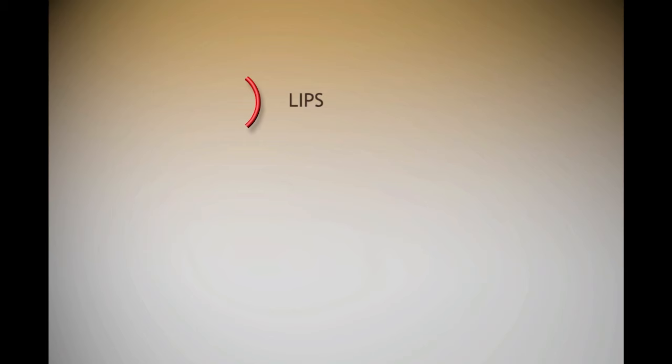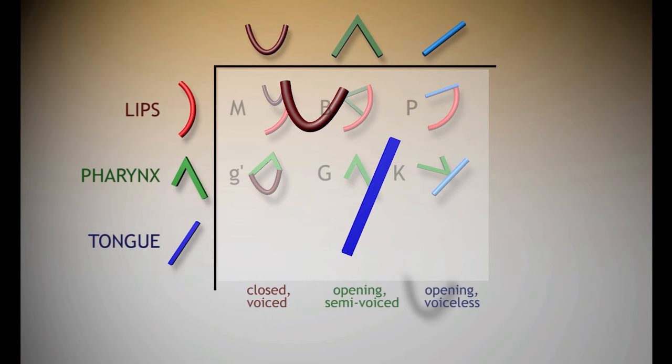And then we have the same similar families of three phonetic sounds produced with the tip of the tongue against the back of the teeth or the top of the mouth. We have the soft sound of N — it sounds very similar to M, but M is produced with the lips and N is produced with the tongue. Then we have T, which corresponds to P. And then again we have something in the middle, which is D. Again there is a slight voice in the beginning with D, then the voice stops and a slight air pressure is released.